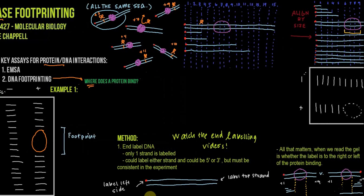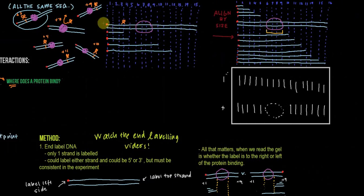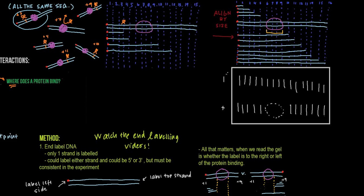Now imagine we run this out on a gel. When we run DNA on a gel, it gets separated by size. So I've reorganized what I've drawn here by size. You've got the first one, plus one, which is one nucleotide; the next one is two nucleotides long; the next is three; the next is four; and so on, where each one gets longer by one nucleotide.